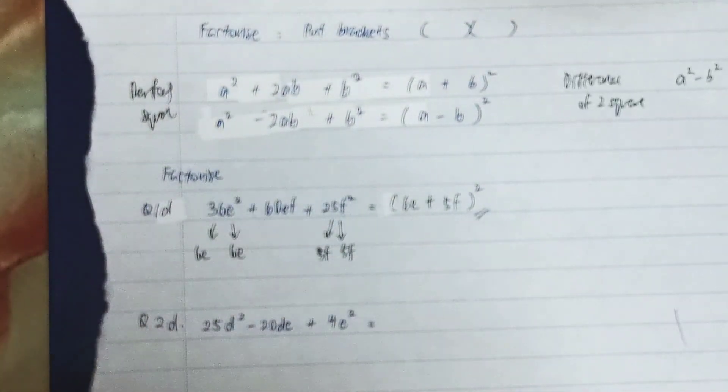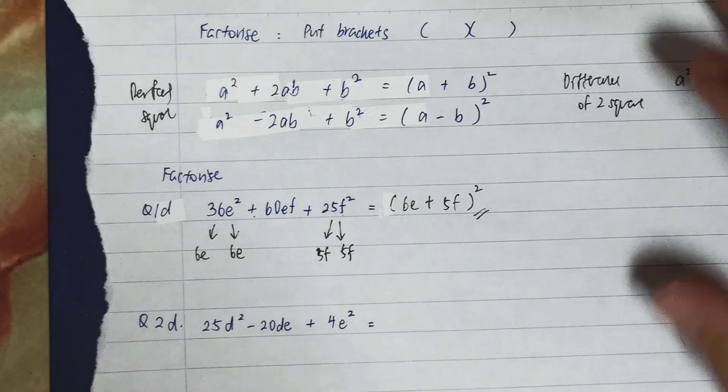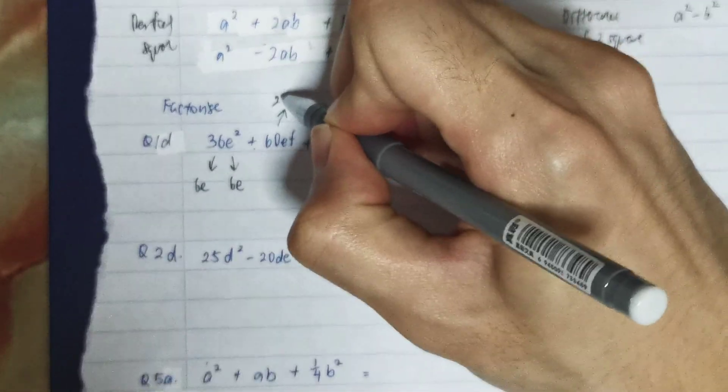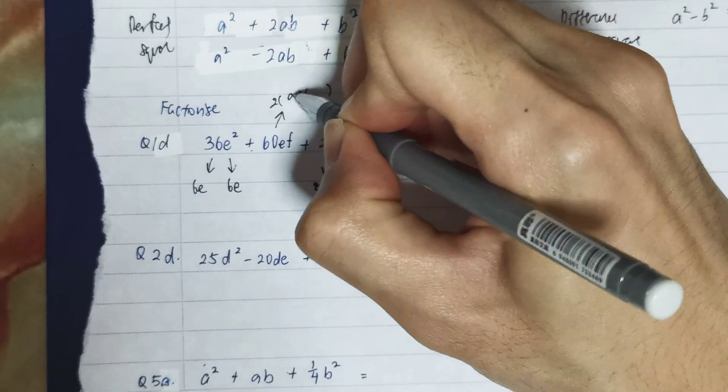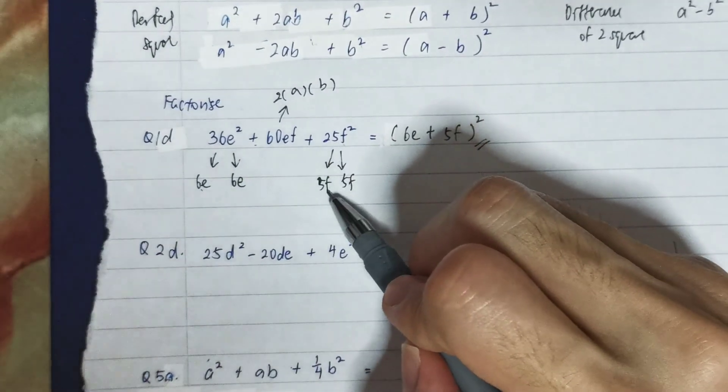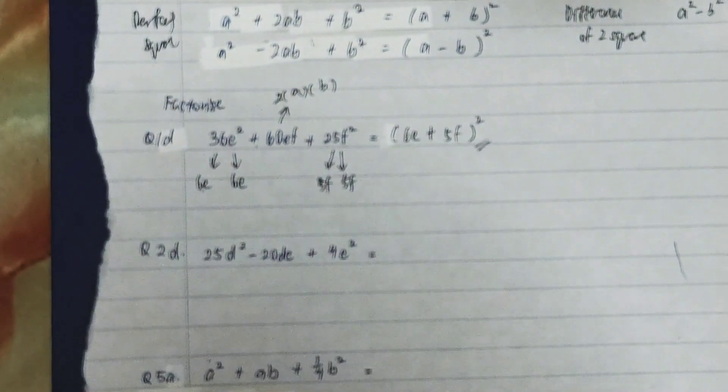When I factorize it, this is my answer. Of course, in the middle term it will always be the 2ab. So our a will be 6e, our b will be 5f. This is how I factorize it.